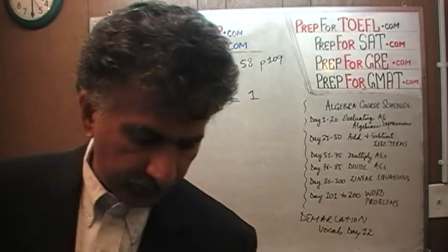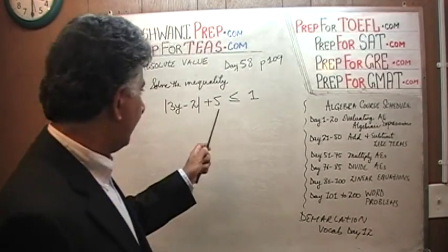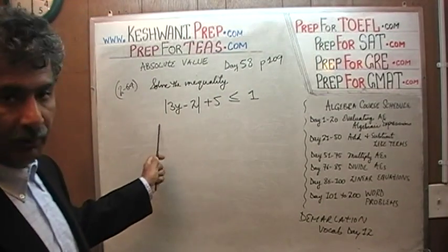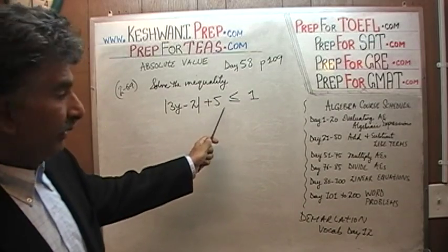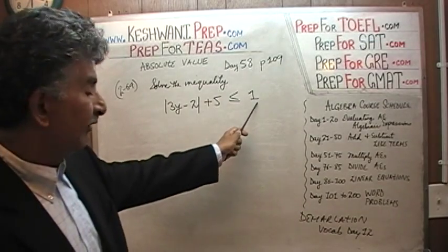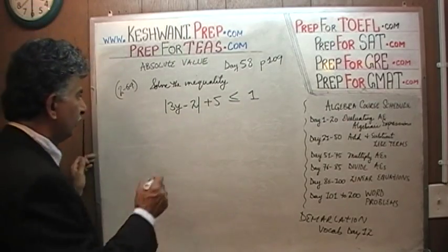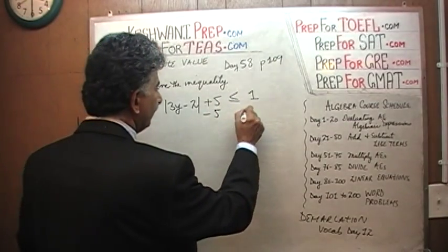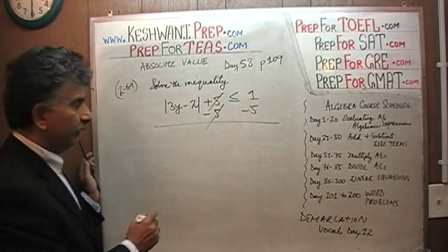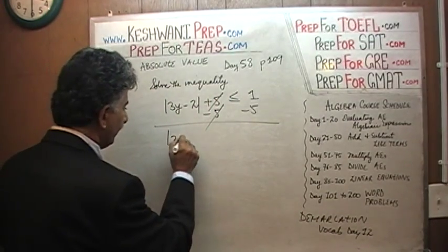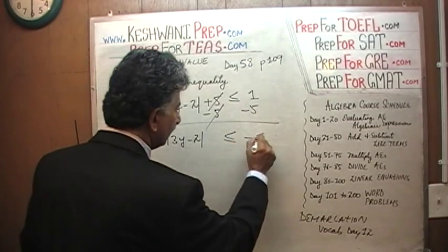The first thing we have to realize is that this 5 appears outside the absolute value. It has to be taken away from it — we have to bring it to that side immediately so that we can analyze the absolute value part. So we subtract 5 from both sides, and what we find is: the absolute value of 3y minus 2 is less than or equal to negative 4.